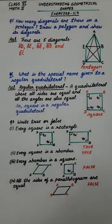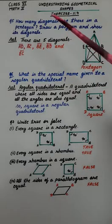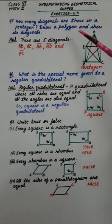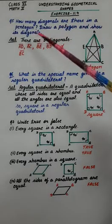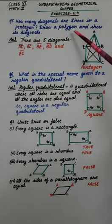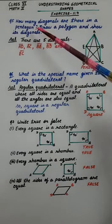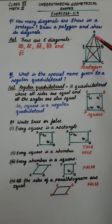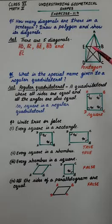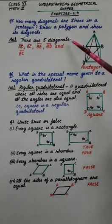Students, let's see exercise 11.4, question number 5. How many diagonals are there in a pentagon? Draw the polygon and show its diagonals. A polygon is a closed figure made up of line segments. So a pentagon is also a polygon. Here I have drawn a pentagon. Now let's see how many diagonals there are — there are 5 diagonals.